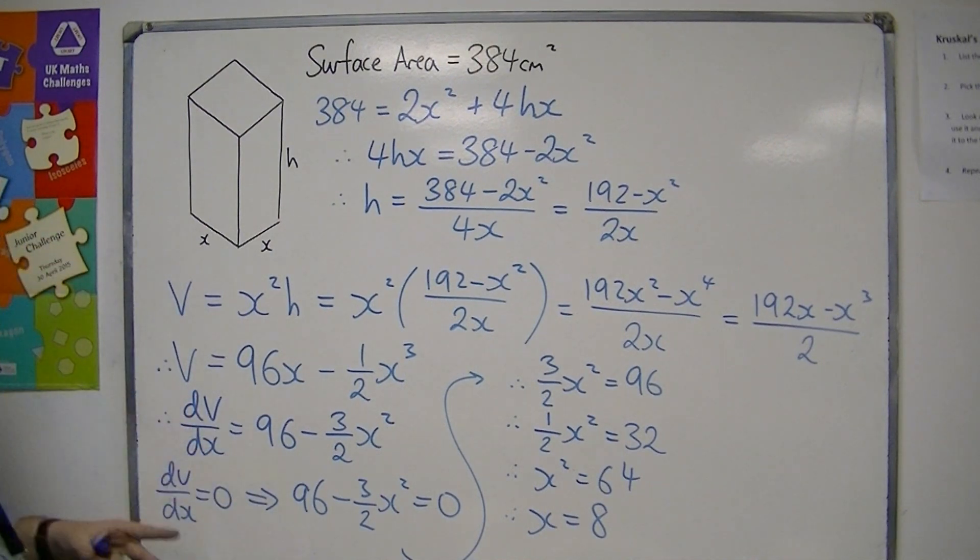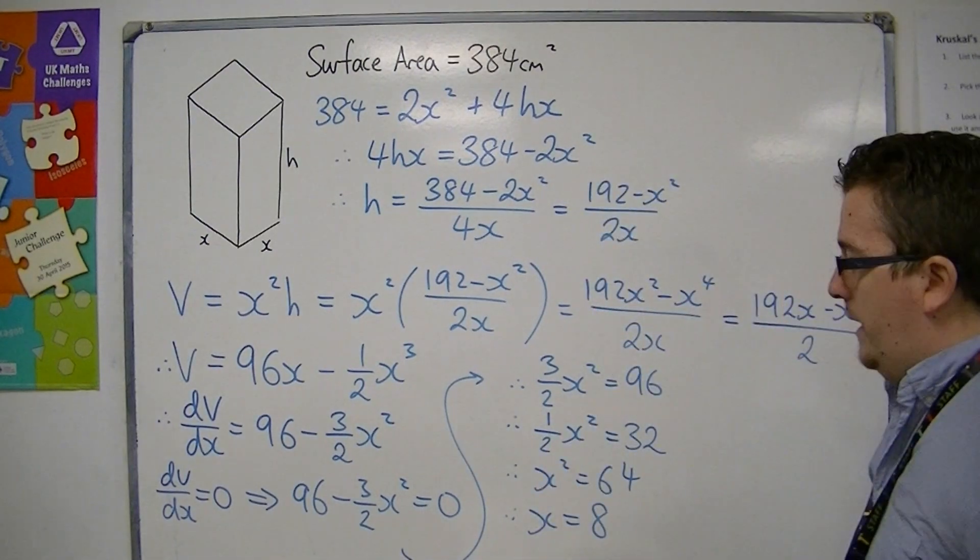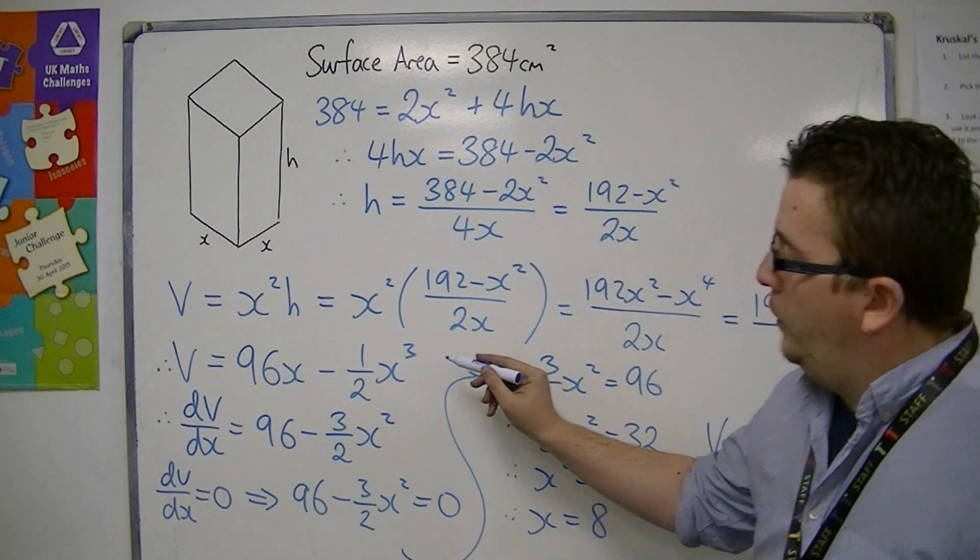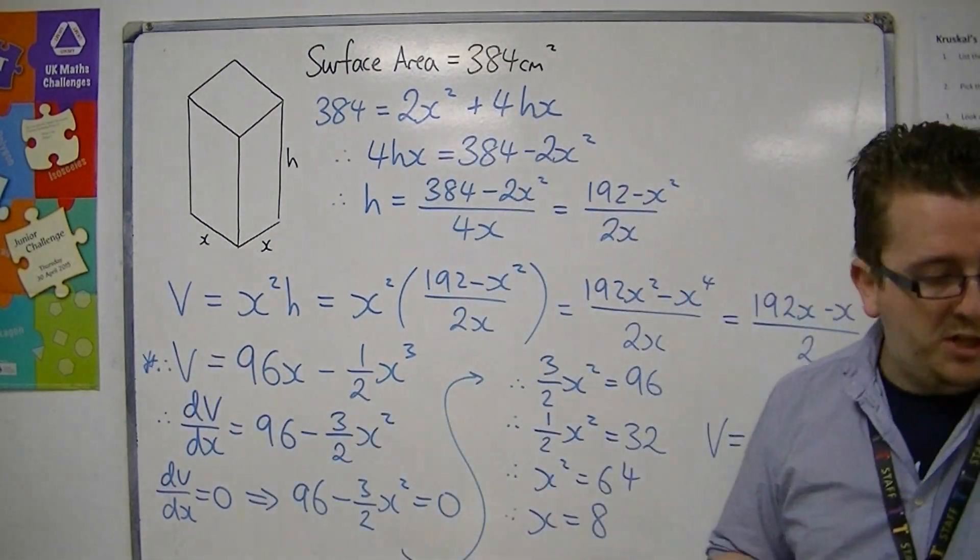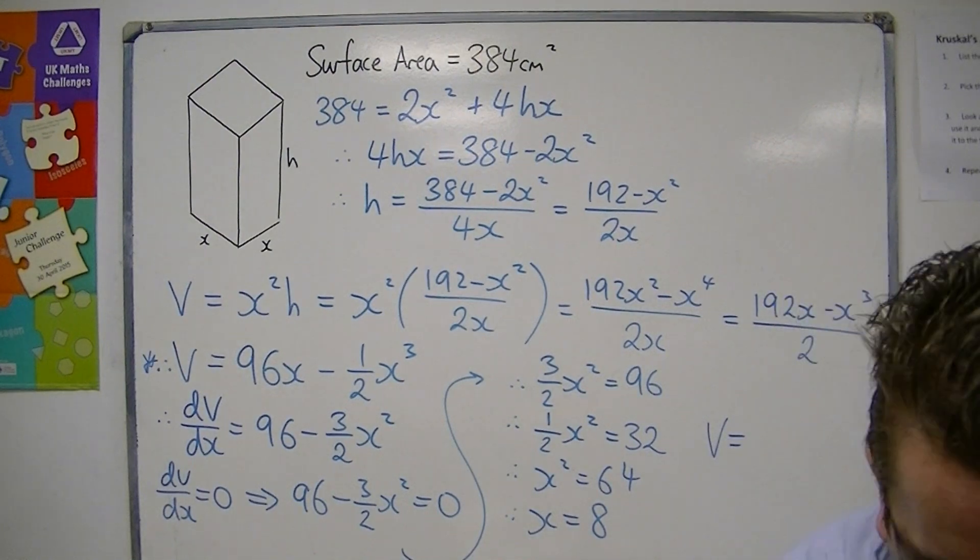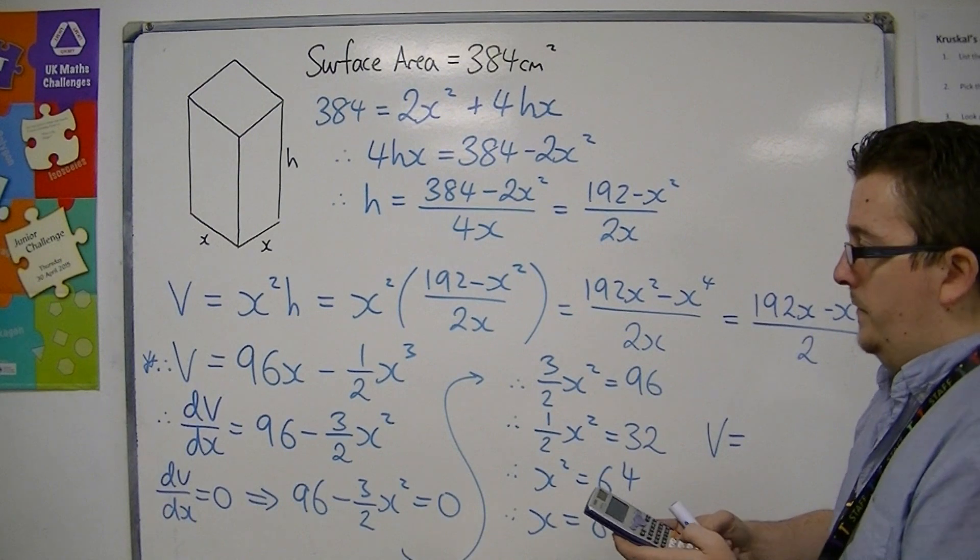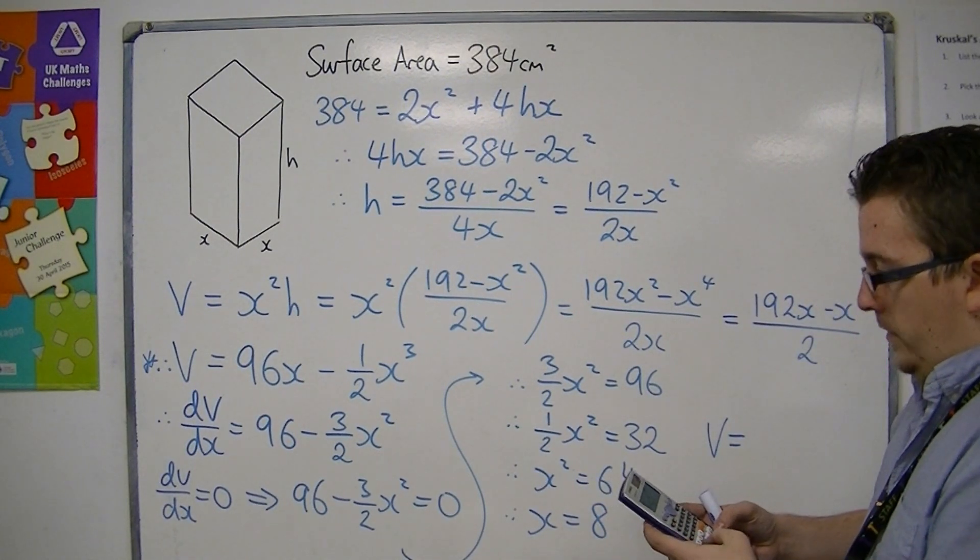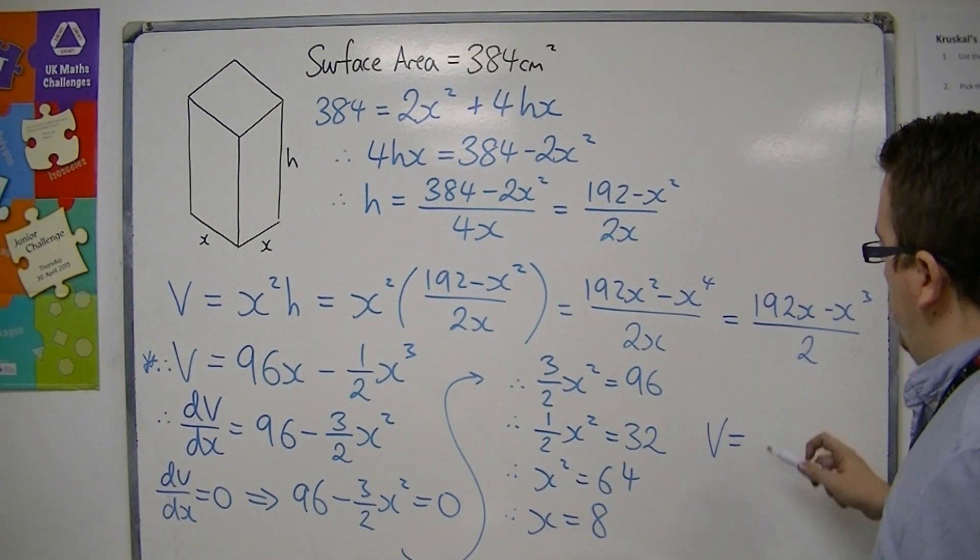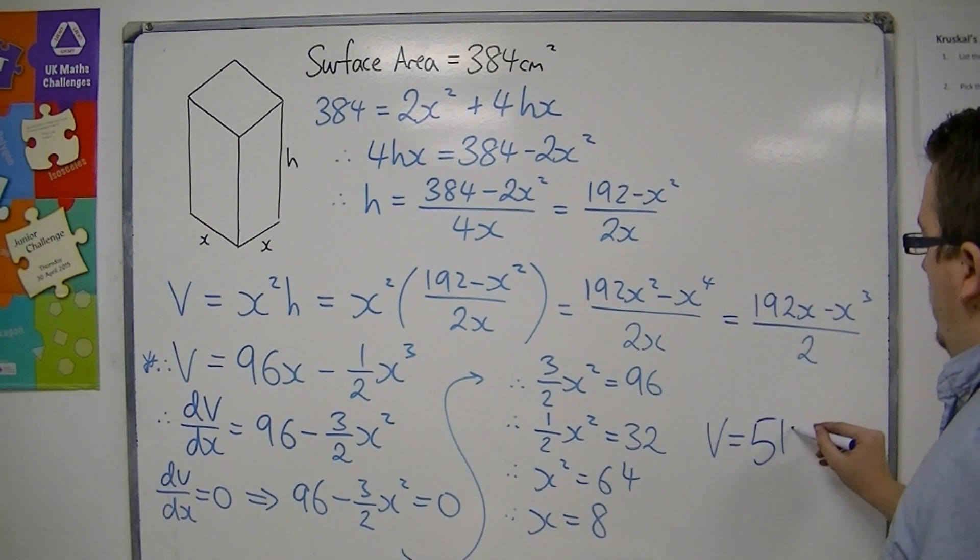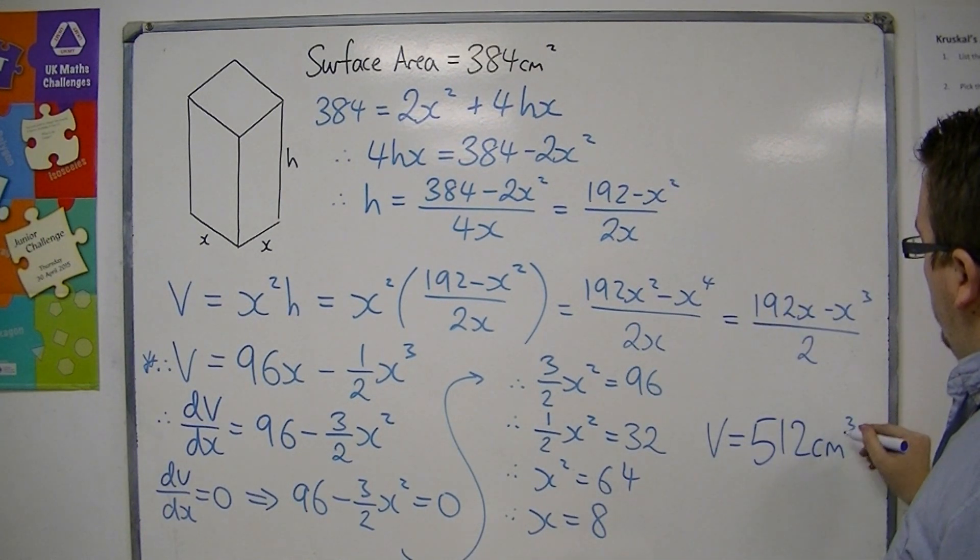So with x being 8, we can then identify what the volume would have to be. We can substitute that into the volume equation here, and we get 96 times 8, take away 1 half times 8 cubed, which is 512. And because the original surface area was in centimeters squared, this must be in centimeters cubed.